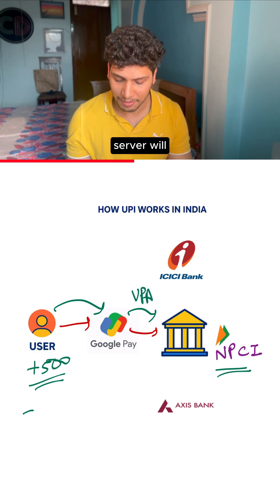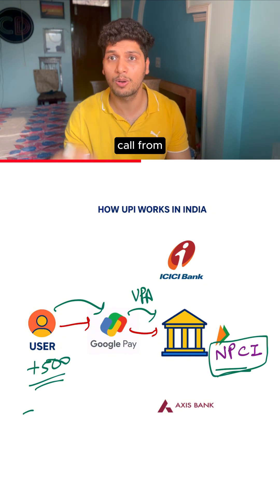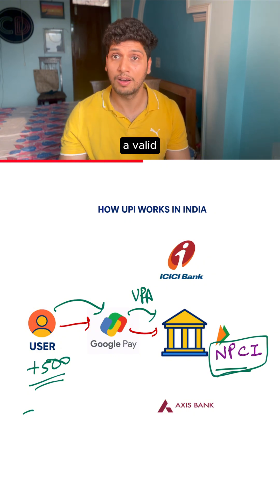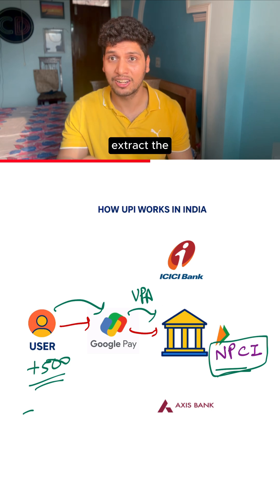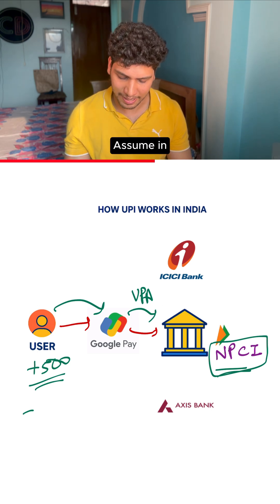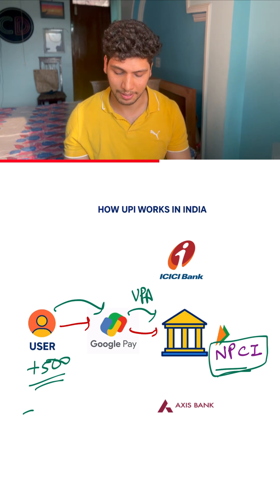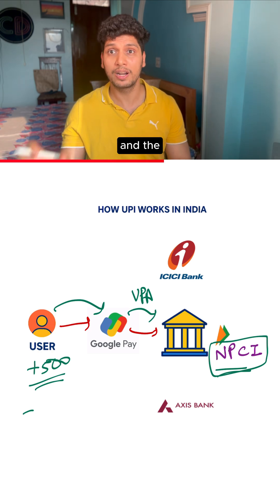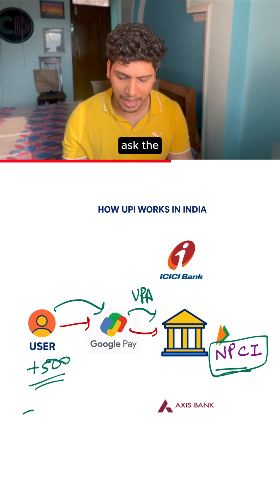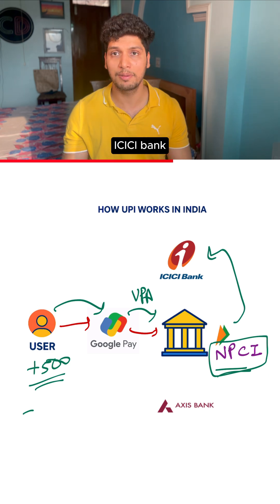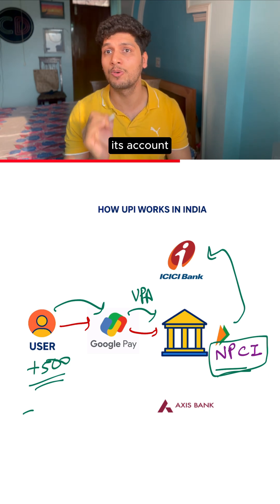The NPCI server will then check its database to see whether it's a legitimate call from a valid UPI holder or not. It will extract the details of the sender's bank — assume in this case it comes out to be ICICI bank. It will then retrieve the IFSC code and the bank account number of the sender.